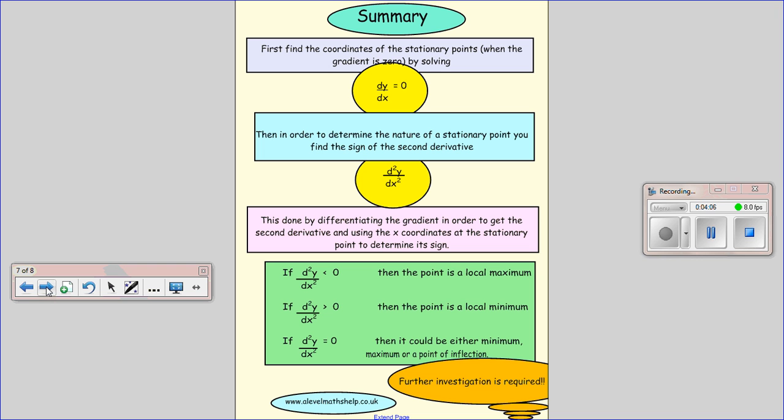Just a very quick summary. If you want to find the nature of stationary points, first of all you have to differentiate, set it to 0. Then you differentiate a second time, and then you substitute in the result of your second differential, the points that you found from this one. And if you get that d²y by dx² is smaller than 0, you have a maximum, bigger than 0, you have a minimum, and equals 0, you're very sad at that point. It could either be a maximum, minimum, or a point of inflection, and you'd have to do some more work to work out what it was.